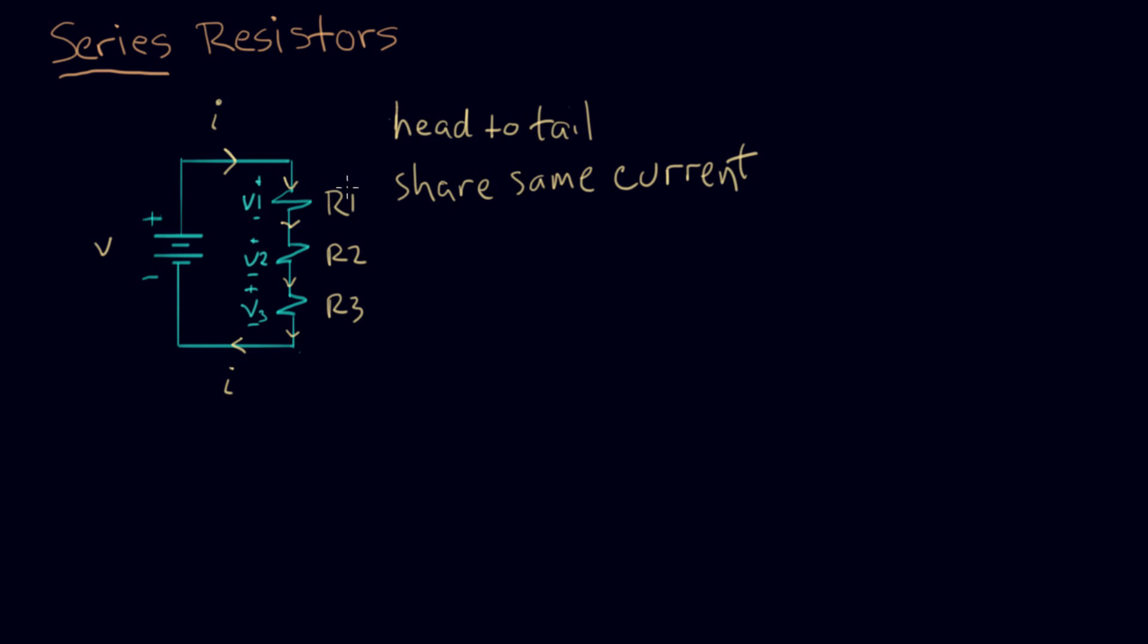So in general, if these resistors are different values, because they have the same current going through them, Ohm's law tells us these voltages will all be different. So the question I want to answer with series resistors is, could I replace all three of these with a single resistor that caused the same current to flow? That's the question we have on the table right now.